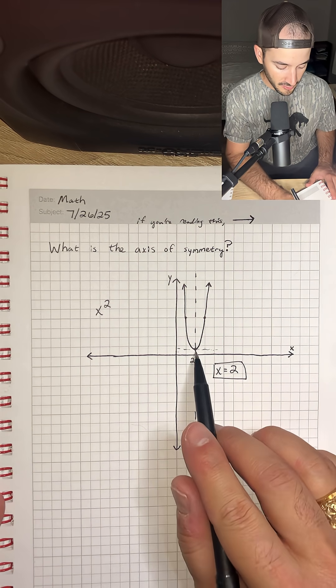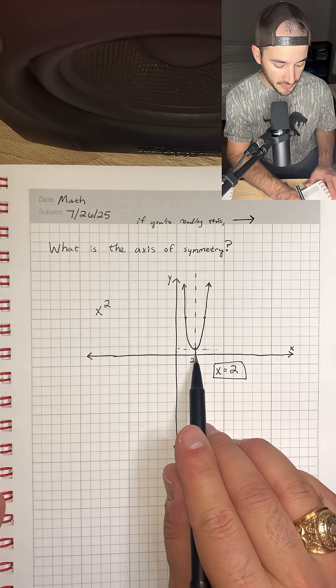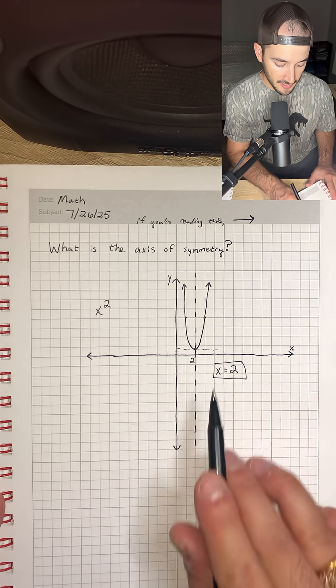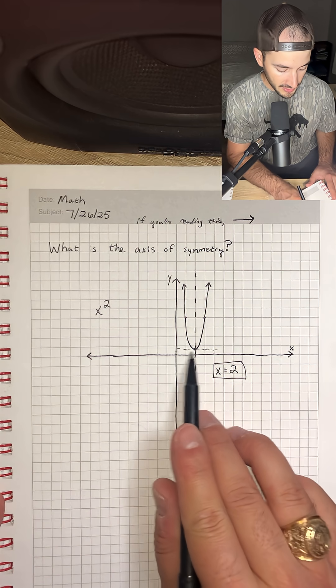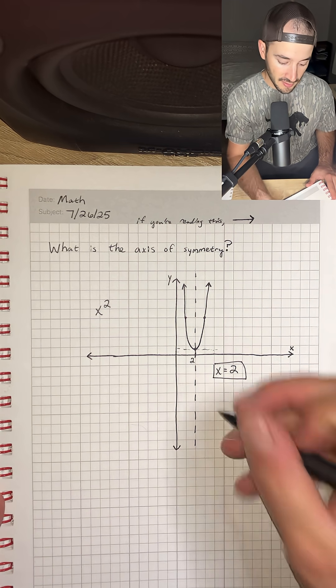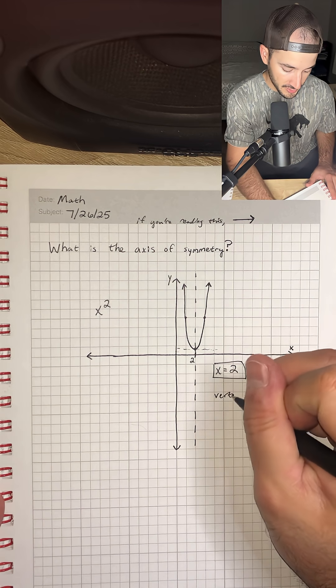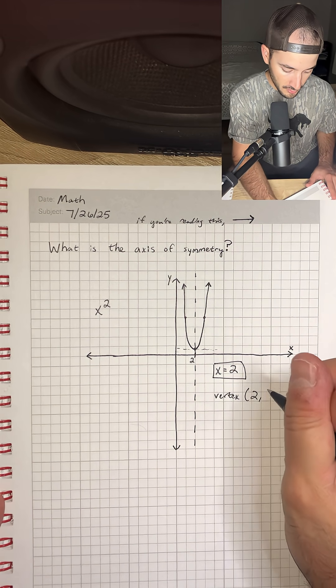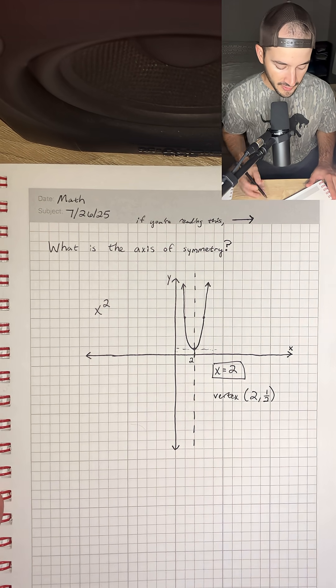So that point, the vertex, is at positive 2 for the x value, which we already said, but its y value is 1 half. So that means that the vertex would be positive 2 comma 1 half or 0.5.